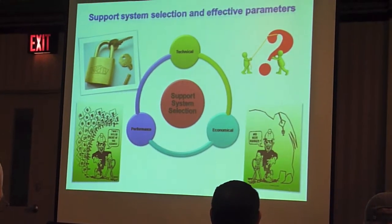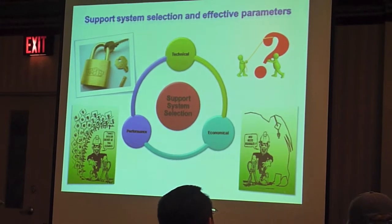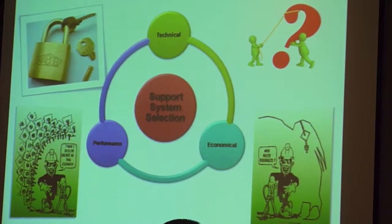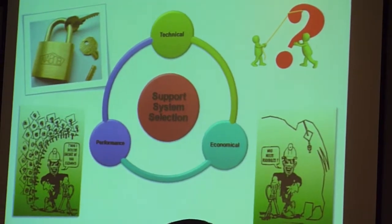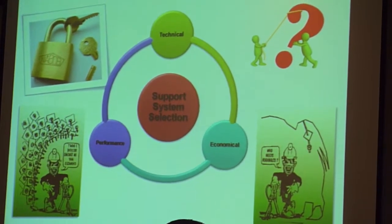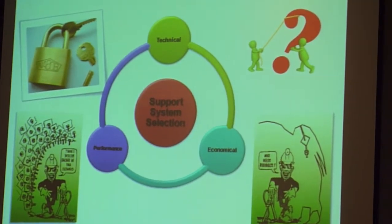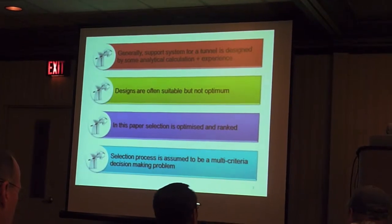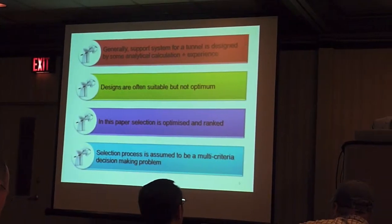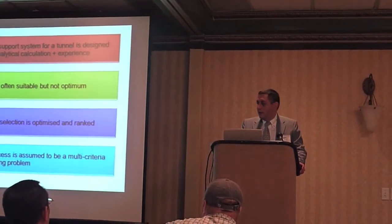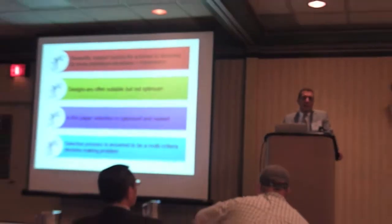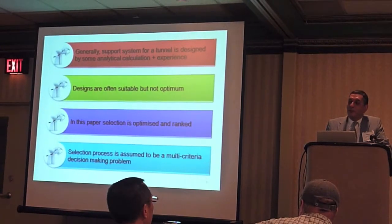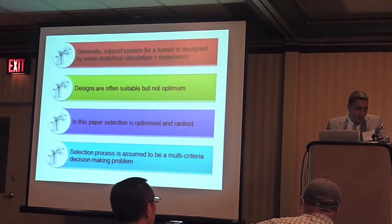For a tunnel support system, to select a support system for a tunnel, we obviously have different requirements: technical requirements — these are what we expect from our support system — technical methods, performance criteria, and of course economics, something which is not taken very seriously in some presentations. Generally, as discussed in the workshop yesterday, support systems are chosen by analytical calculations and experience. Different people gave different weights to these two methods — some thought experience was more important, others thought numerical methods were more important.